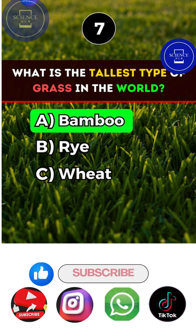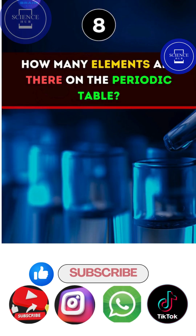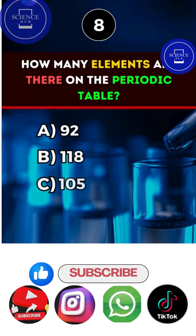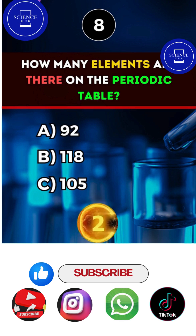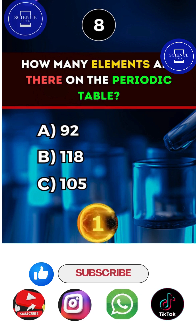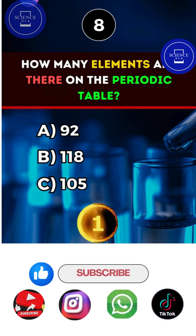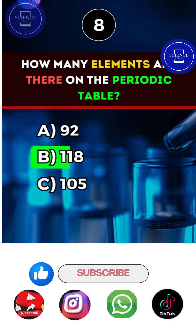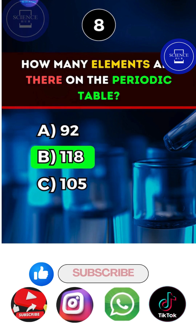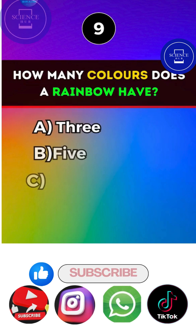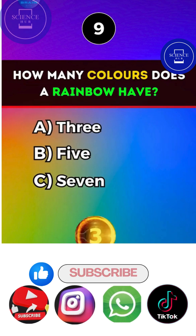Answer: B, Mount Everest. What is the tallest type of grass in the world? Answer: A, bamboo. How many elements are there on the periodic table?